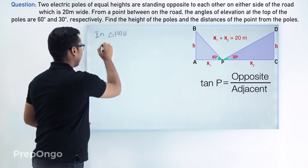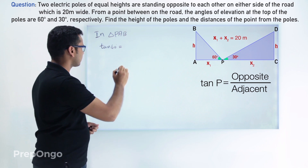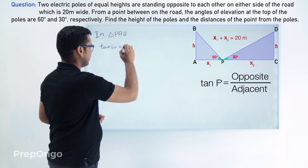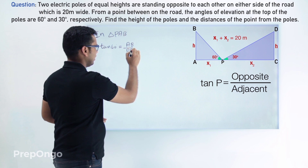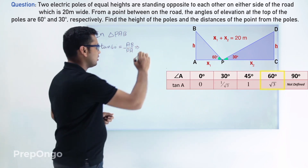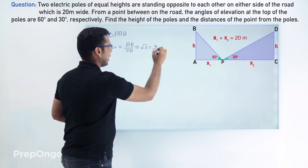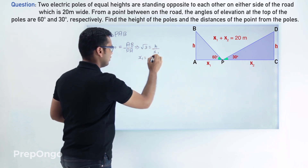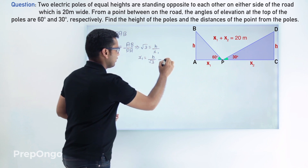Tan of 60 degrees equals the opposite AB upon the adjacent PA. From the table, tan 60 is root 3. So root 3 equals H over x1, which gives us x1 equals H divided by root 3. Let's call this equation 1.